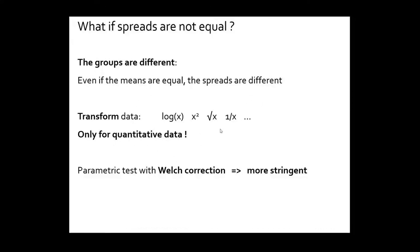If the log transformation or any transformation doesn't help, if the spreads stay different, you can still do a parametric test. The data is normally distributed, it stays normally distributed, but with a Welch correction. This Welch correction will make the parametric test a bit more stringent.